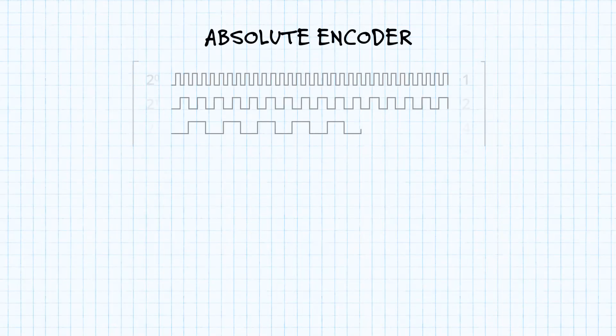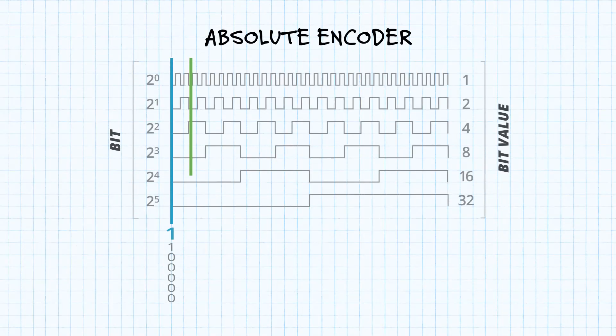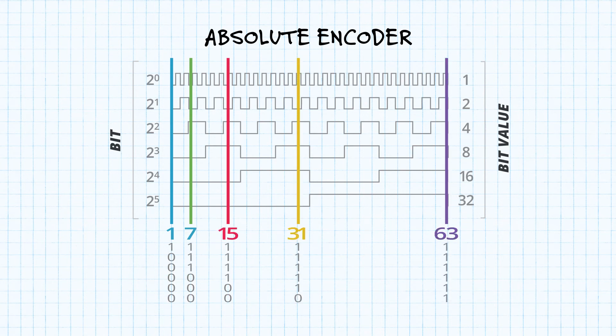The difference though is that the positions of the absolute encoder are each unique, and with a simple calculation, you can convert the binary position value to an actual angle in degrees.